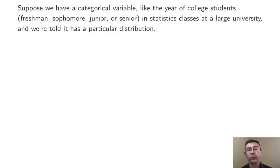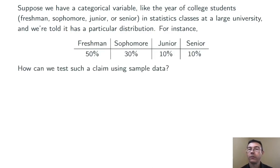Suppose we have some categorical variable, like the year of college students in statistics classes at a large university. And suppose we're told it has a particular distribution, like this one: 50% freshman, 30% sophomore, 10% junior, and 10% senior.